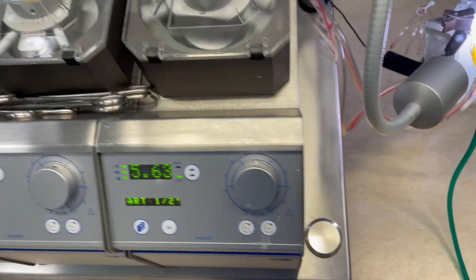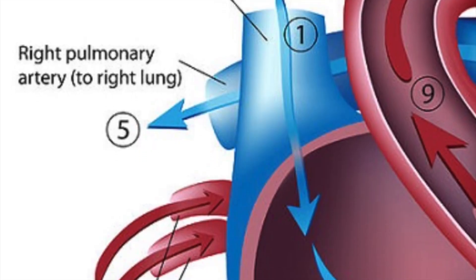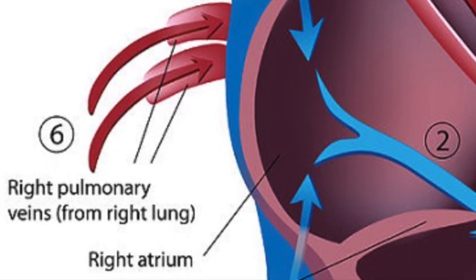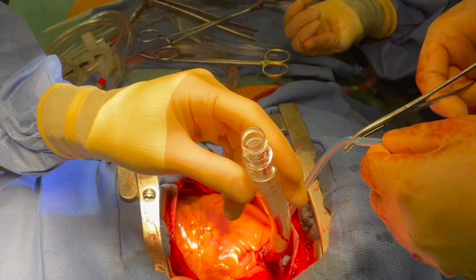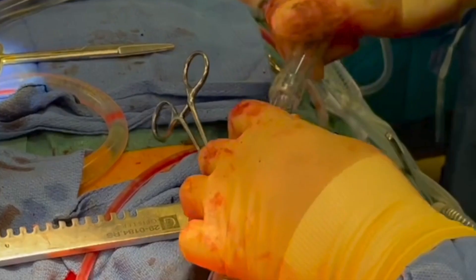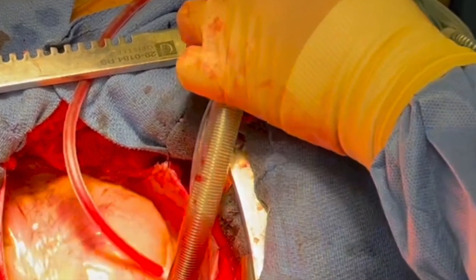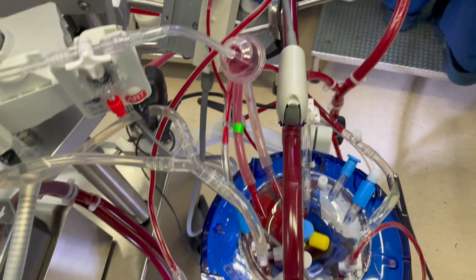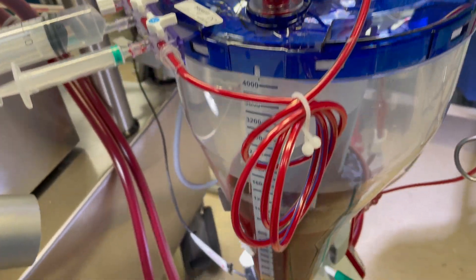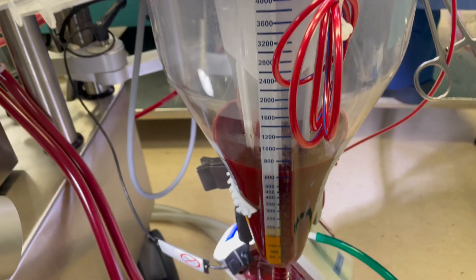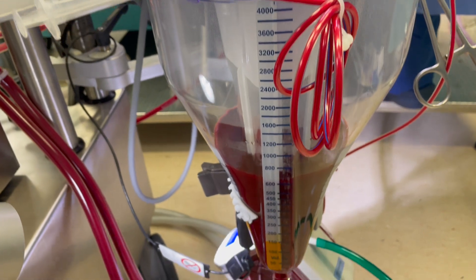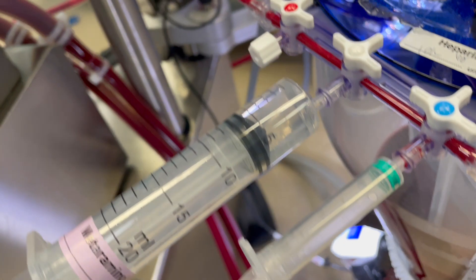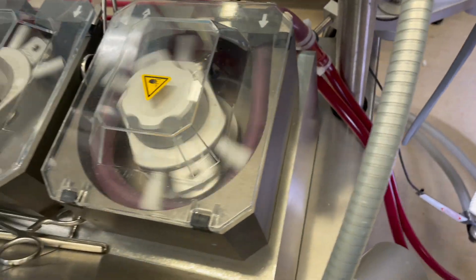When you look at the heart, blood from the SVC and IVC drains into the right atrium, then from the right atrium to the right ventricle. Before blood goes into the right atrium, we place a venous cannula and drain the blood through gravity. Blue indicates venous, red indicates arterial. The venous blood drains by gravity into a collection chamber — it can hold up to 4 litres and has a filter that can handle up to 7 litres per minute. Once filtered, the blood stays in the reservoir.